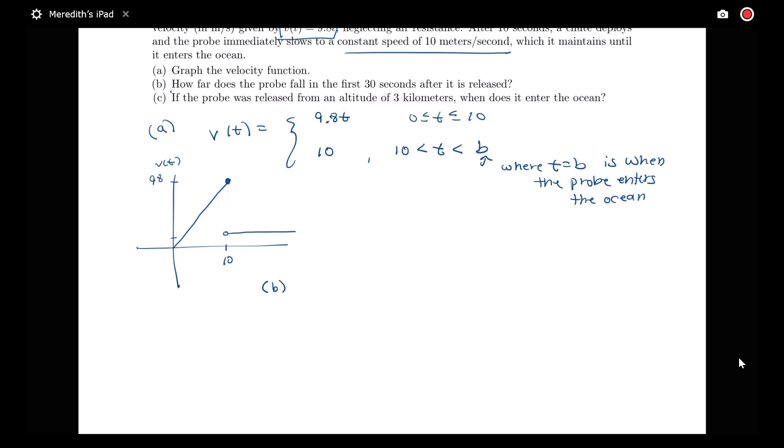So let's look at answering a couple of questions. Part B asks us, how far does the probe fall in the first 30 seconds after it is released? So this is a question that's about distance and it's talking about how far something falls over an interval. So this is a net change type of problem here. It's worth noting that distance equals displacement here since our velocity is positive, then we're moving in the same direction as our velocity.